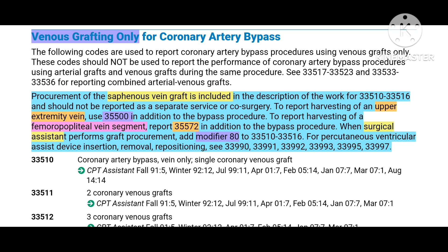Now let us look at guidelines for venous grafting only for coronary artery bypass procedure, where only veins are used as grafts. First, check whether veins or arteries are used. If only veins are used, use the following set of codes. The guideline states that if saphenous vein is taken for grafting, you do not have to report any additional codes because it is always included in the CABG procedure.